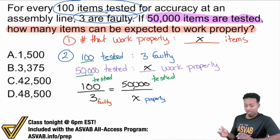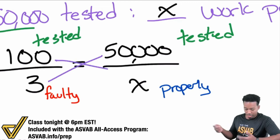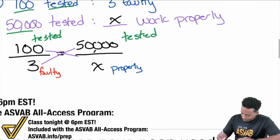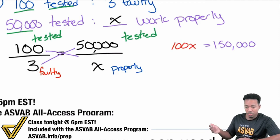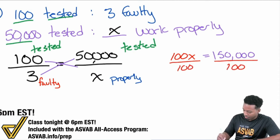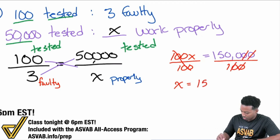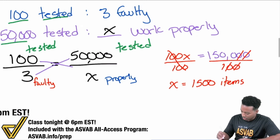Let's say you made that mistake and went ahead and solved this proportion by cross-multiplying and then dividing. So 3 times 50,000 gives us 150,000. Then 100 times X is 100X. Divide both sides by 100 and you receive X equals 1,500 — 1,500 items. You might think those work properly, but no — it's actually 1,500 faulty items, because that's what its counterpart represents.